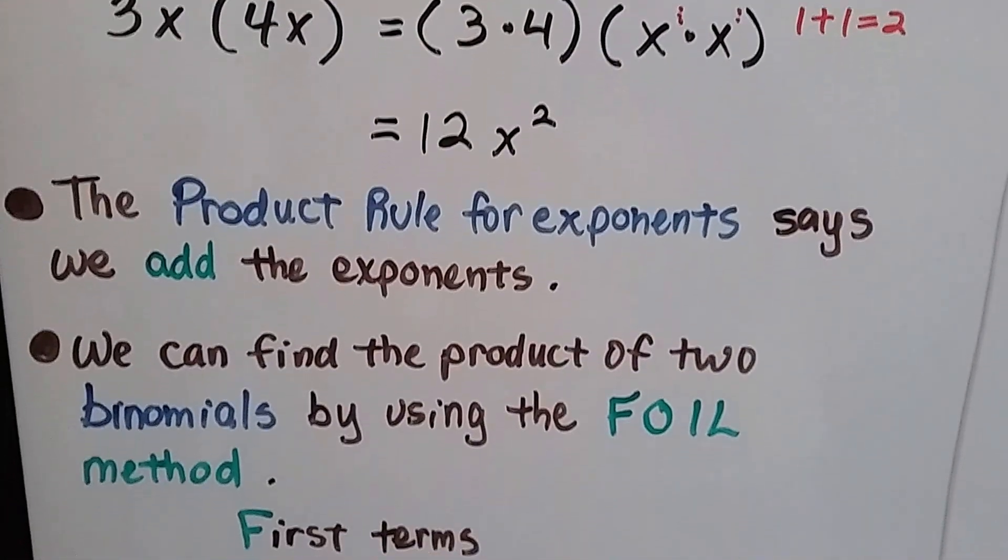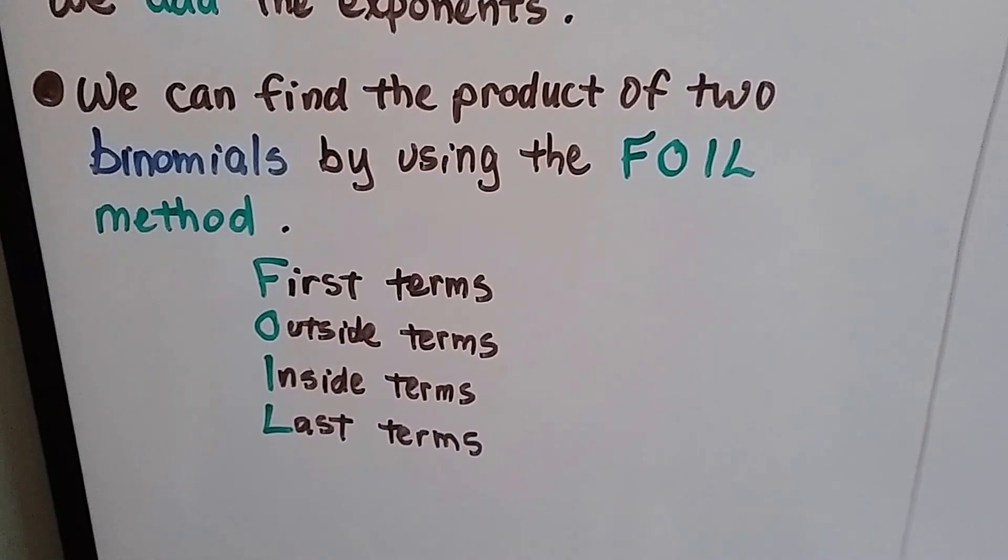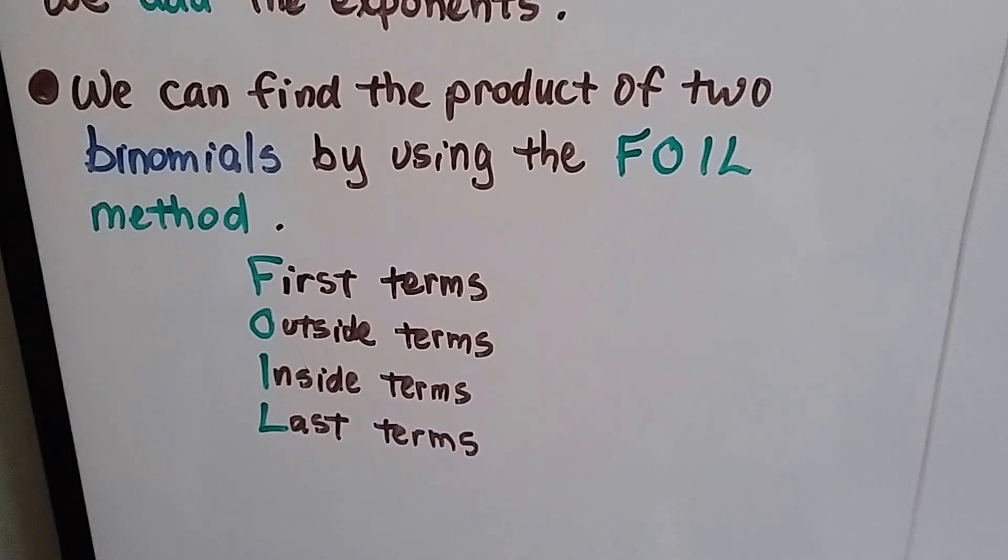We can find the product of two binomials by using the FOIL method. First terms, outer terms, inside terms, last terms. That's the order that we multiply.